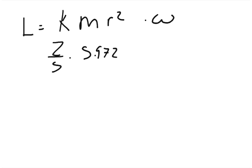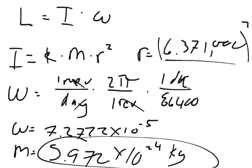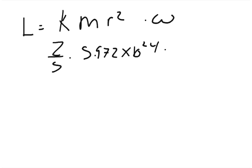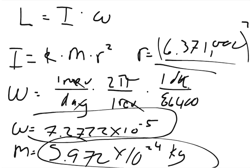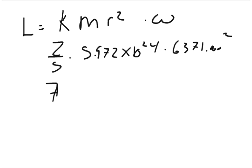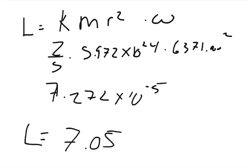r squared, which we're going to say is 6,371,000 squared. And then the angular momentum, which we said was 7.272 times 10 to the negative 5th. Plug all that in your calculator. You should get the angular momentum from Earth's spinning is equal to 7.0509 times 10 to the 33rd power.